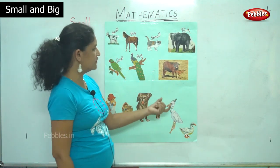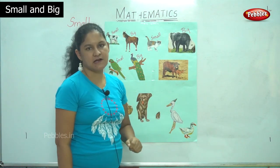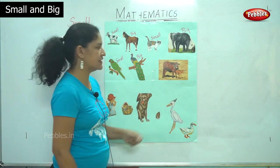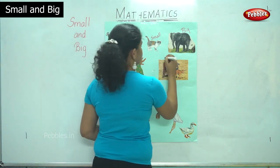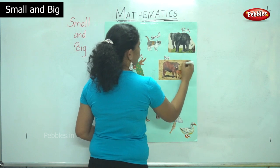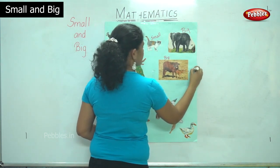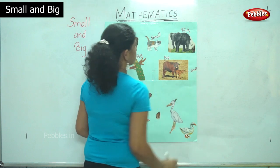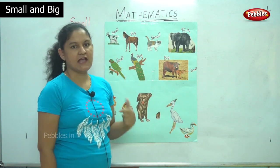Then we have the cow and its calf. The mother cow is big and the calf is small. This is the concept of small and big. As we have already learnt the numbers — the smaller number and the bigger number — here we have pictures of animals.